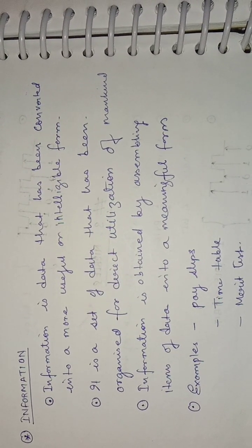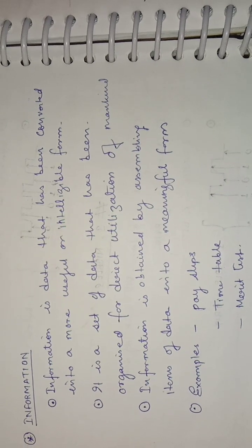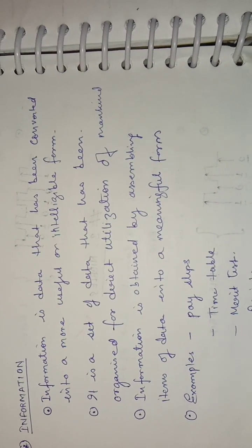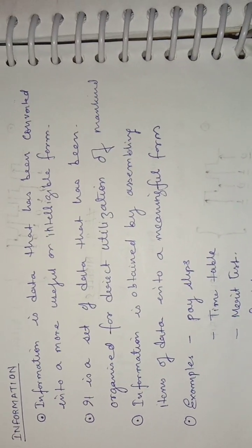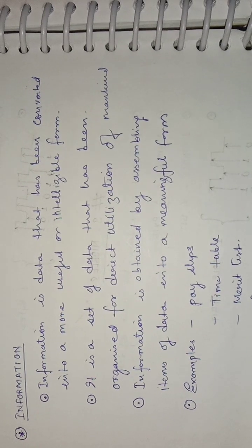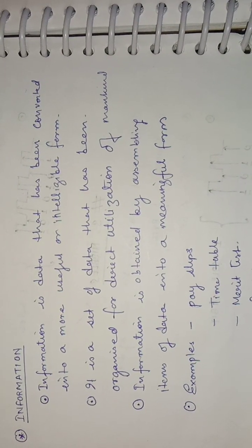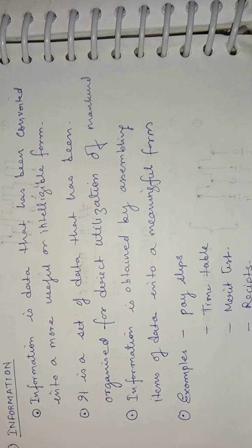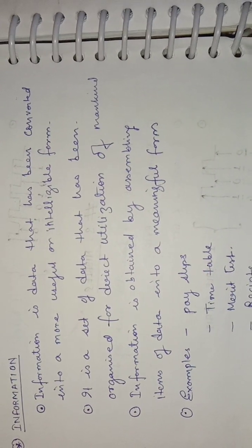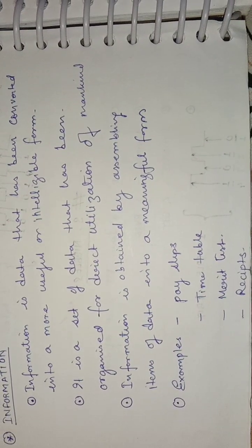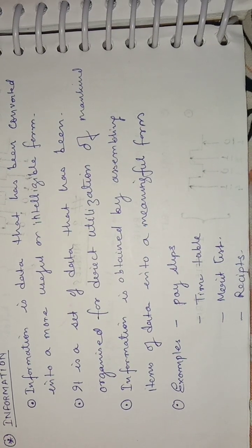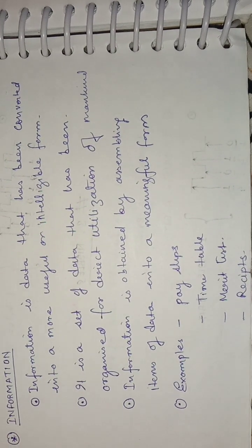Data cannot be used directly. For example, if you have the name 'Ravi,' that alone cannot be used meaningfully. But if you say 'Ravi is a boy who reads in class 10th,' that makes sense and can be used by mankind. Information is obtained by assembling items of data into a meaningful form.